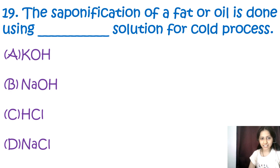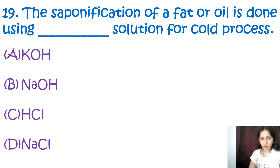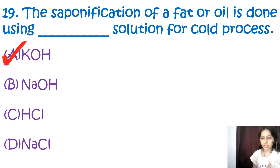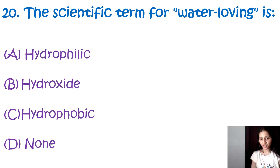Question number 19: The saponification of a fat or oil is done using which solution for the cold process? Options are potassium hydroxide, sodium hydroxide, hydrochloric acid, and sodium chloride. The correct option is A, potassium hydroxide. Saponification of fat or oil is done using potassium hydroxide solution for the cold process. When potassium hydroxide is used, soft soaps are formed, which cannot be used in hard water.